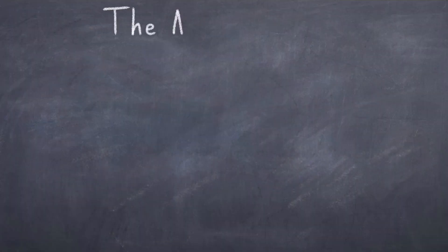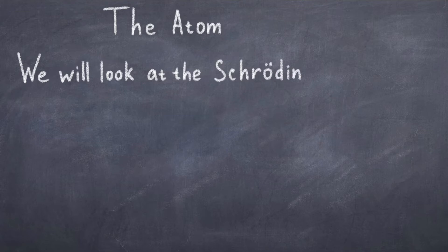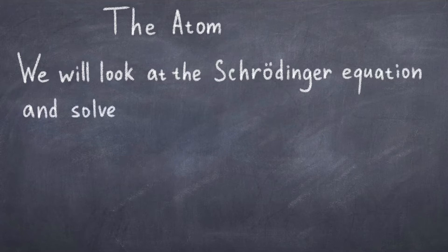This video will be about the atom and how it can even exist. In the previous video we discussed some fundamental aspects of quantum mechanics, and with that in mind let us go back to the Schrödinger equation and solve it for the simplest atom, namely the hydrogen atom.